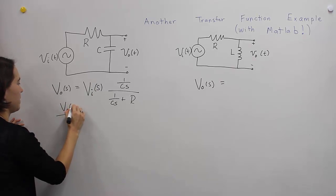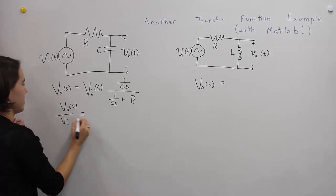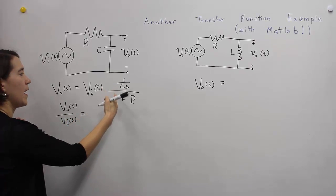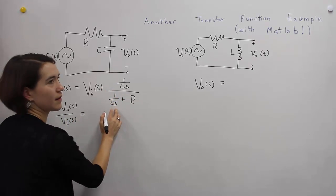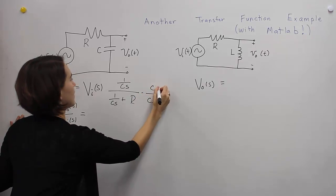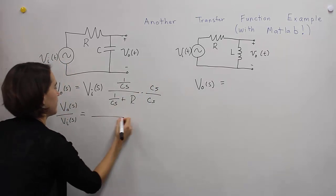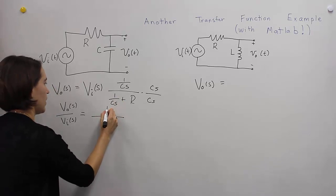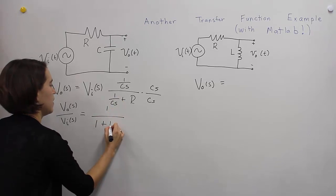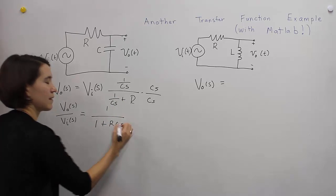Put it in our standard form. And we're going to get rid of these S's on the bottom, so we're going to multiply by Cs, Cs. Simplify, so we'll get 1, or 1 plus RC, S.